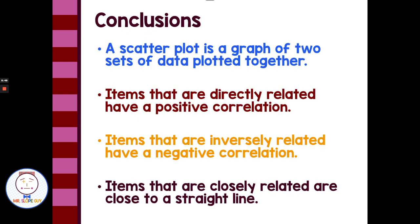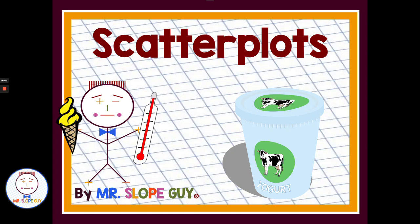In conclusion: a scatterplot is a graph of two sets of data plotted together. Items that are directly related have a positive correlation, and items that are inversely related have a negative correlation. Items that are closely related are close to a straight line. I hope that helps you with scatterplots.